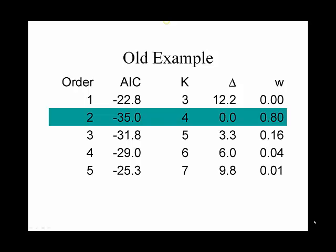So back to our five polynomial models. In the example that I had pulled up originally, the second order model was the best one. But there's 16% of the weight on the third order model, and of course it's going to have different parameter estimates than the other one.